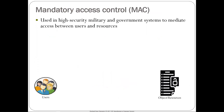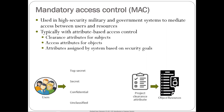The next thing is mandatory access control, used in high-security military and government systems to mediate accesses between users and resources. With mandatory access control, you typically use it in conjunction with attributes — specifically clearance attributes for subjects. If you work for the federal government, you apply for particular clearance levels, and they do background checks. They'll contact professors to verify whether a student was in their class.